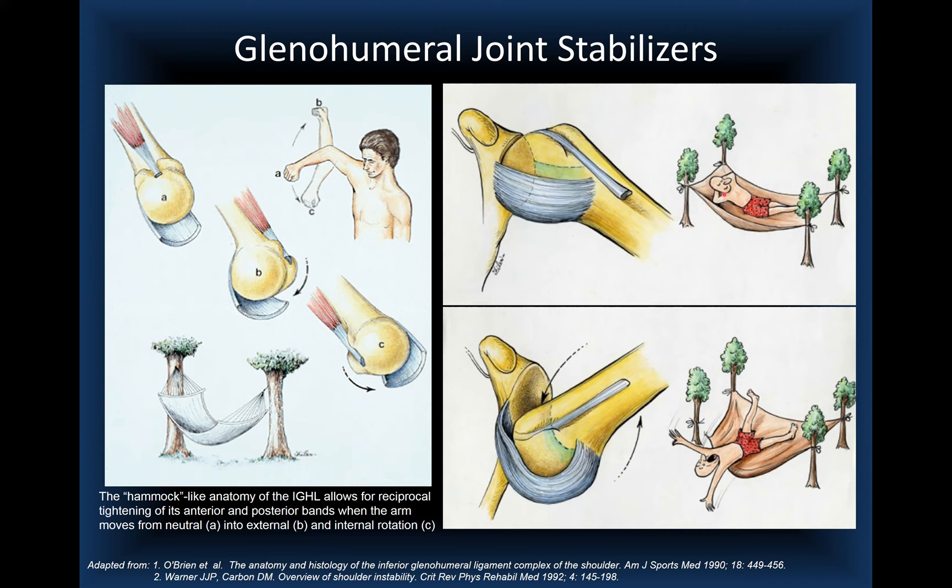There are humeral and glenoid insertions of both the anterior and posterior bands. Failure can occur at either insertion site on the glenoid or humerus, resulting in dislocation. The person follows the hammock — that's the essence of the mechanism.